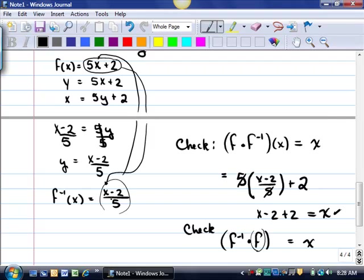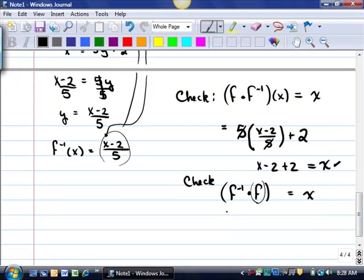So, now, use the one that's been circled, or the one that the arrow is pointing to, and plug into that formula. So, I'm going to plug in the 5x plus 2 minus 2 divided by 5. We get 5x. The 2's cancel. And the 5's cancel.